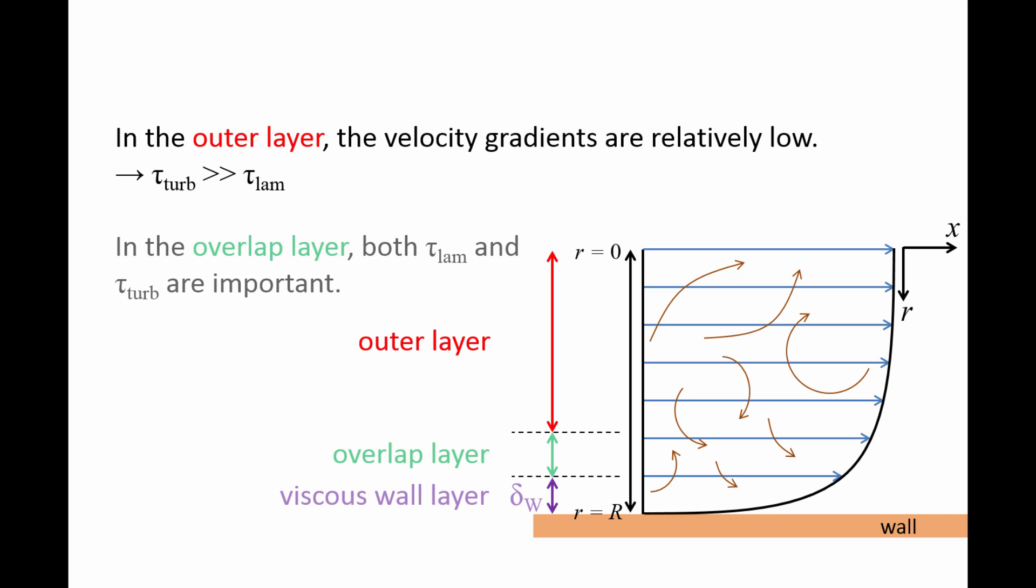There is a middle layer, called the overlap layer, in which both the laminar and turbulent shear stresses should be accounted for. This means that the turbulent shear stress is indeed important throughout almost the entire flow.